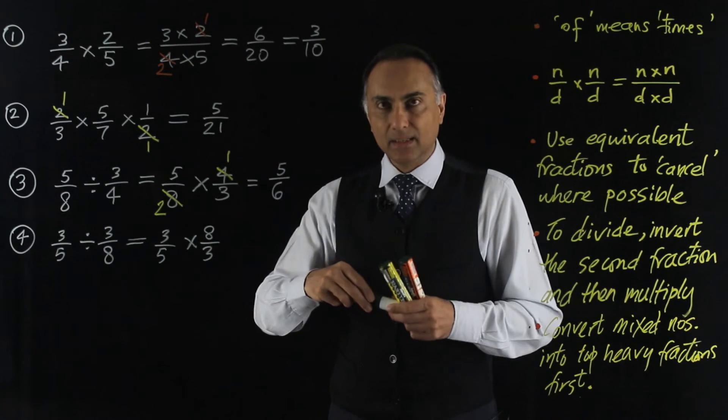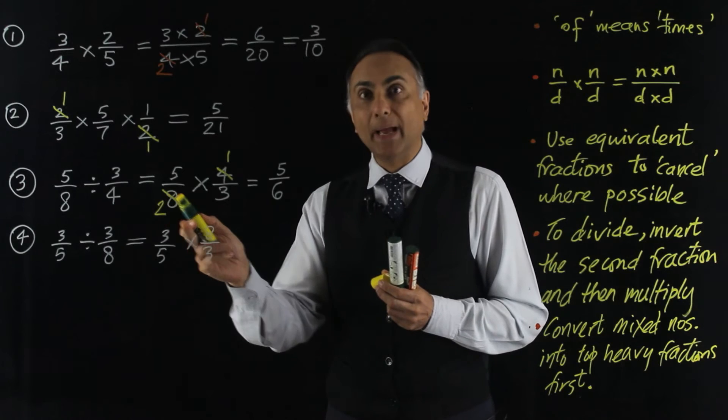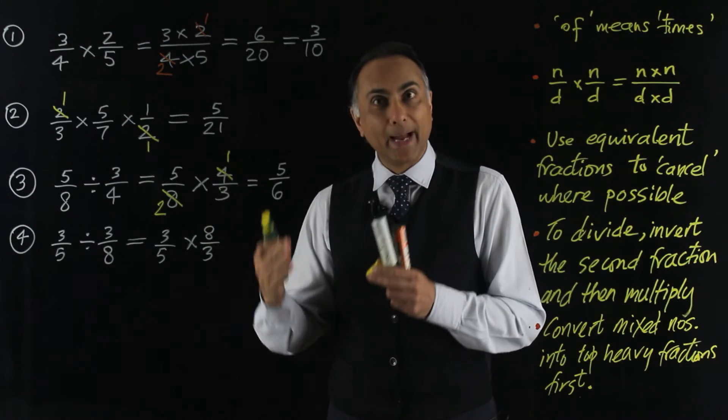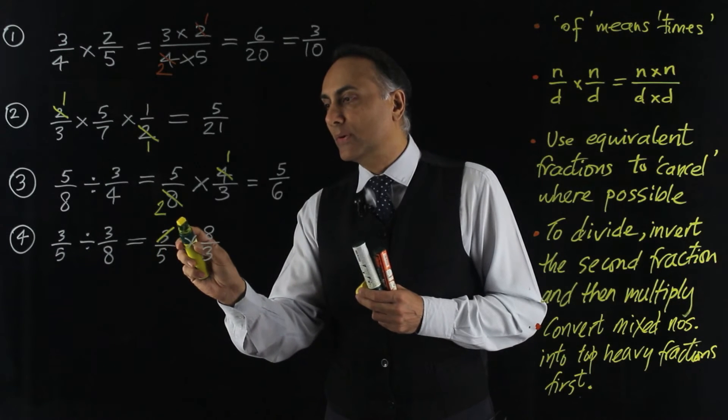I now look for cancelling, and since I have a 3 on the top and a 3 on the bottom, I can divide top and bottom by 3. And when I do that, it reduces the 3 to a 1.